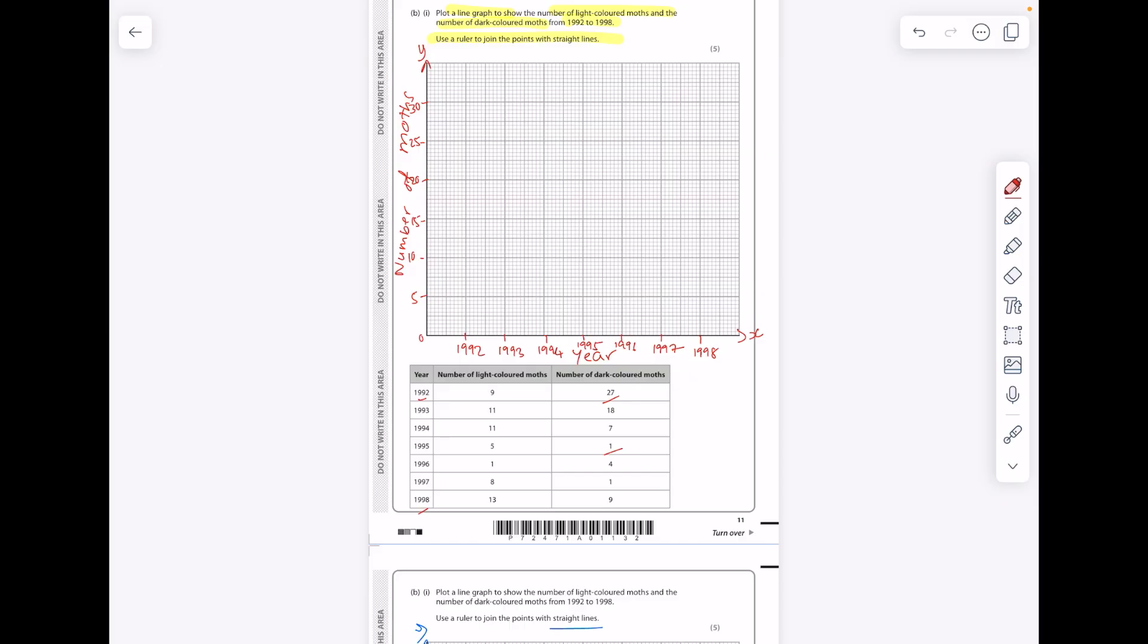Except if you want to draw a key, I'll just label each line. So I'm going to take this column first of all. So in 1992 I had 9 light-colored moths. In 1993 I had 11. Use little crosses to represent those dots. 94 was 11, 95 was 5, 96 was 1, 97 was 8, 98 was 13. It says use a ruler to join the points with straight lines, so do follow those instructions. I'm going to label that light-colored moths.